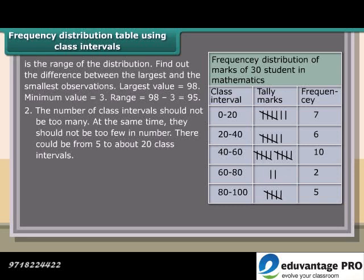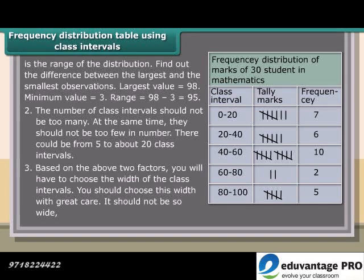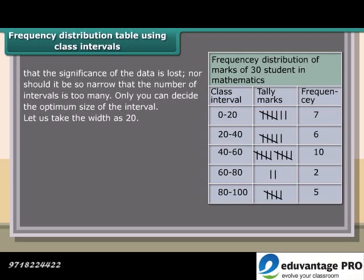The number of class intervals should not be too many. At the same time, they should not be too few in number. There could be from 5 to about 20 class intervals. Based on the above two factors, you will have to choose the width of the class intervals. You should choose this width with great care. It should not be so wide that the significance of the data is lost, nor should it be so narrow that the number of intervals is too many. Only you can decide the optimum size of the interval. Let us take the width as 20.